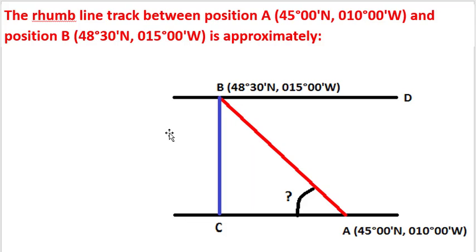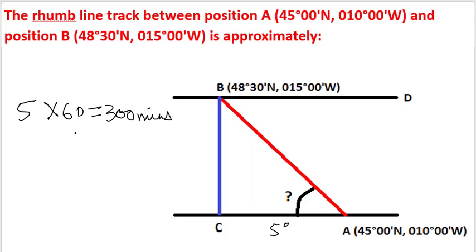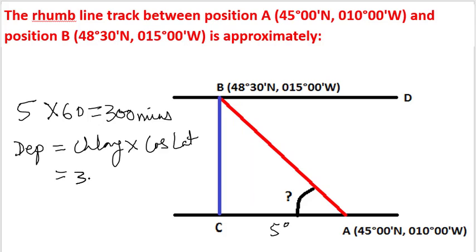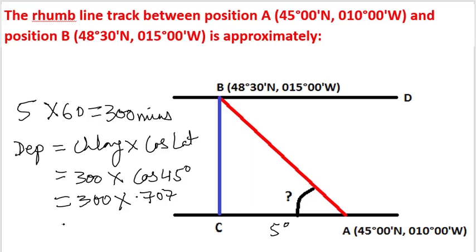The next step is to find distance AC in nautical miles. We have a ChLong of 5 degrees. In minutes, that is 5 into 60, equal to 300 minutes. Now we use the departure formula: departure equals ChLong into cos of latitude, which is 300 into cos 45, equal to 300 into 0.707, equal to 212 nautical miles.